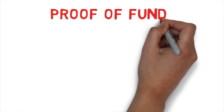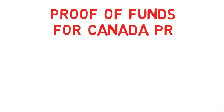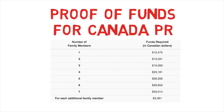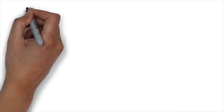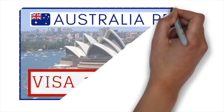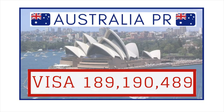Some of you might know that proof of funds is required for Canadian PR — you need to have a certain amount of money to immigrate to Canada as a permanent resident. Similarly, it is required for Australian PR as well, but in certain cases it's a bit complicated. It's important to know about visa subclasses 189, 190, and 489 — I made a separate video on it, the link will be in the description box below.